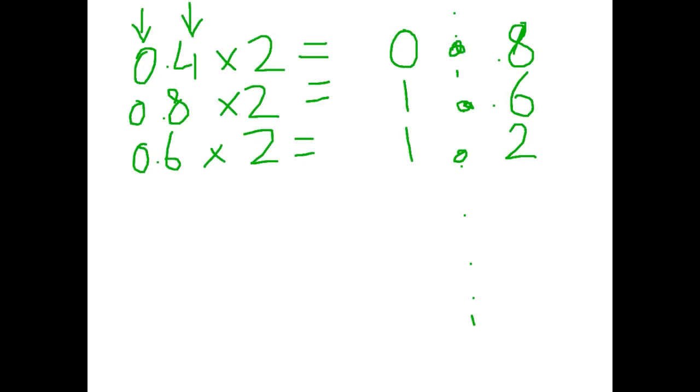So again I leave my 1 there and I take my 0.2 to the next row. 0.2 times 2 is equal to 0.4. And I leave my 0 there and I take my 0.4 and I multiply it by 2. Two lots of 0.4 is 0.8. What we're going to notice here is that it is actually a recurring number.